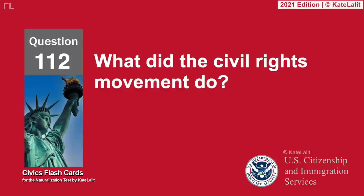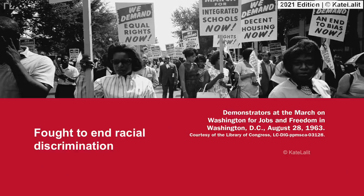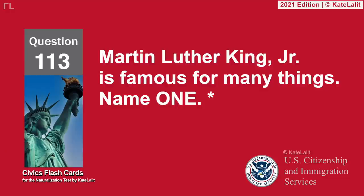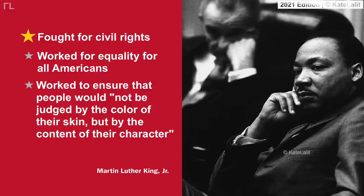What did the Civil Rights Movement do? Fought to end racial discrimination. Martin Luther King Jr. is famous for many things — name one: Fought for Civil Rights. Worked for equality for all Americans. Worked to ensure that people would not be judged by the color of their skin, but by the content of their character.